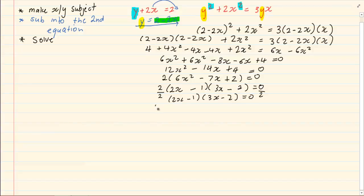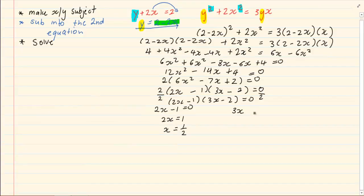Now, we solve each bracket. So, 2x minus 1 is equal to 0. 2x is equal to 1. And x is equal to a half. Then we have 3x minus 2 is equal to 0. 3x is equal to 2. x is equal to 2 over 3.